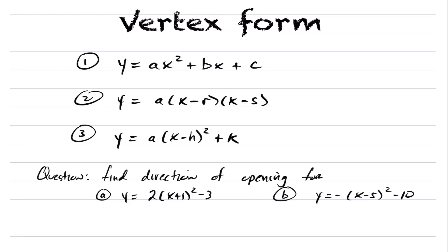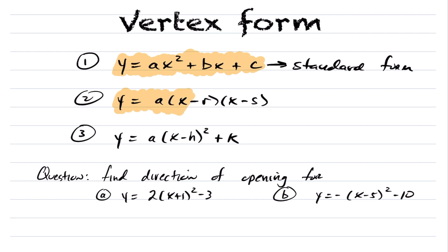We're going to be looking at vertex form of a quadratic. There are three main forms of a quadratic. The first is y equals ax squared plus bx plus c, which is known as standard form. The next is y equals a, x minus r, x minus s, known as factored form. If you're given a quadratic and you use difference of squares, decomposition, GCF, etc., you're putting that quadratic in factored form.